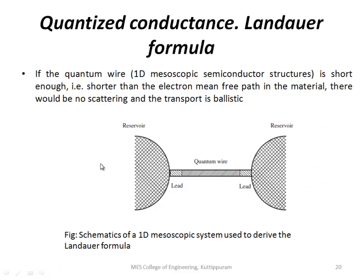The first phenomenon is quantized conductance. To find the conductance, first of all consider a quantum wire. The length of the quantum wire should be very small — that is, it should be shorter than the mean free path. As such, there will be no scattering and the transportation will be ballistic in nature. This is a quantum wire with mesoscopic transport.